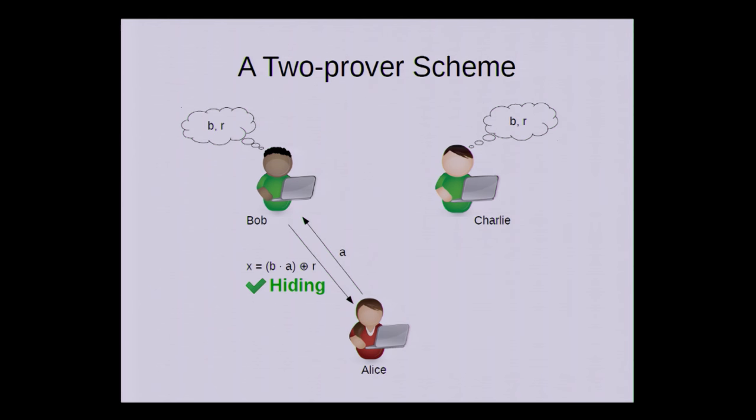To open, Charlie sends the bit B together with the randomness. And then Alice can compute the XOR of both messages, basically decrypting the one-time pad, and then she can check if the outcome is B times A, as it should be.